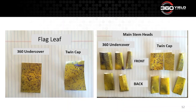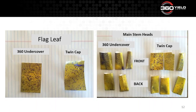Looking at the flag leaf coverage — that's the factory that fills the grain head — on the left is Undercover and on the right is the twin cap system. You'll want the Undercover coverage on the left; it's really important. The other interesting thing is looking at the main grain heads — both did a pretty decent job on the front. But as you look at the back of the head, coverage was really much improved with the Undercover. So we think there's a real benefit, especially thinking about head scab or stagonospora glume blotch, in getting coverage on the front and back of the head.